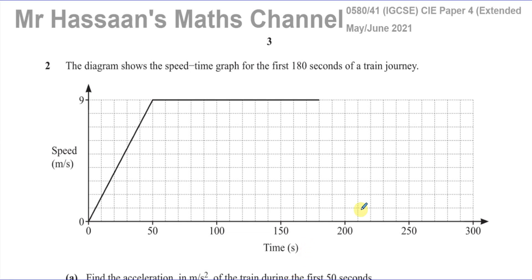Welcome back. This is Mr. Hassan's Maths Channel. I'm now answering question number two from the May-June 2021 IGCSE Cambridge Paper 4, variant 1. This is from the 0580 syllabus, and this question is about speed-time graphs.